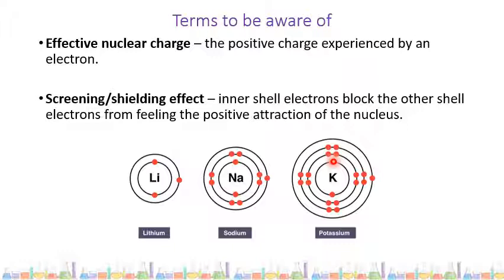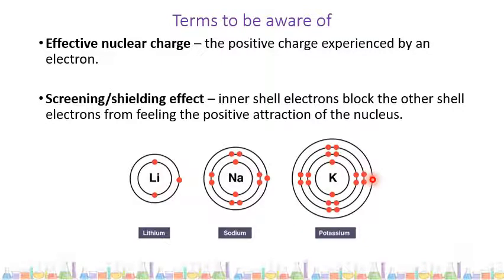If we take potassium, for example, the electrons in N equals 1 will experience a very strong attraction to the nucleus. This electron in N equals 4 will have a weaker attraction to the nucleus — first of all, simply because it's further away, but also because of the screening effect of all the other electrons that are closer to the nucleus. They are all going to get in the way and block the positive attraction from the nucleus to that outer shell electron, screening or shielding the positive effect and blocking it effectively.